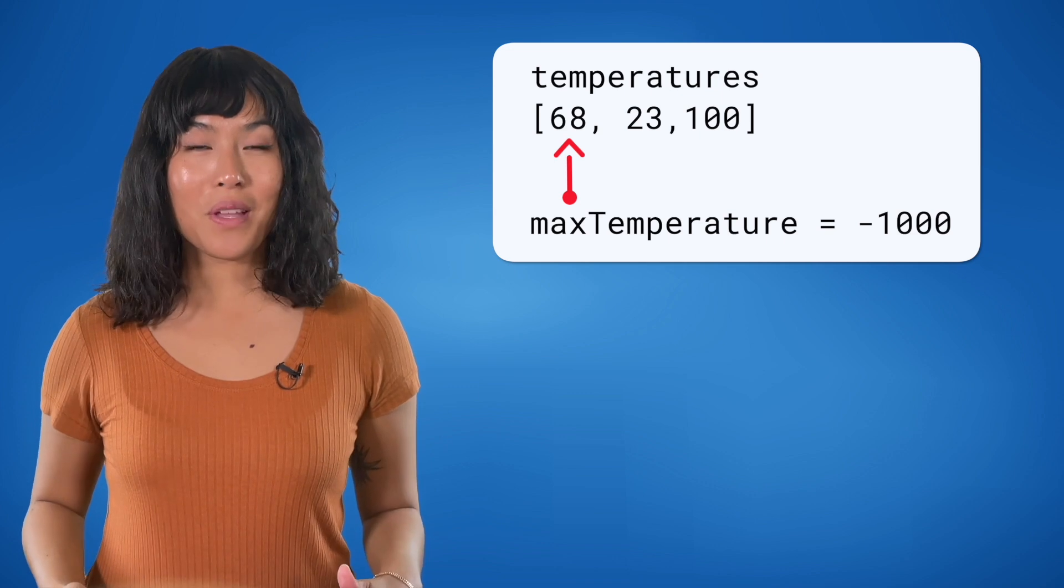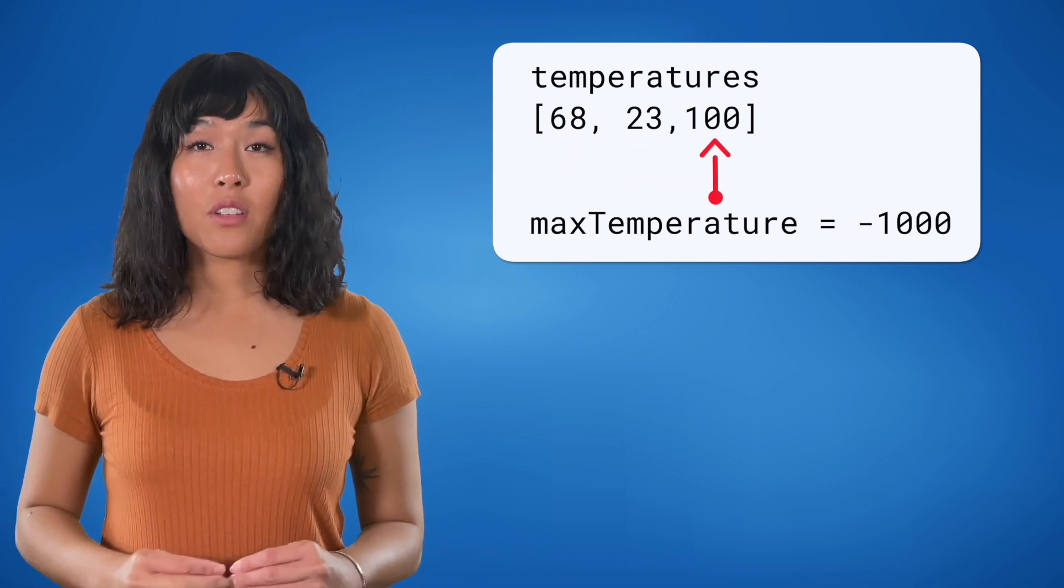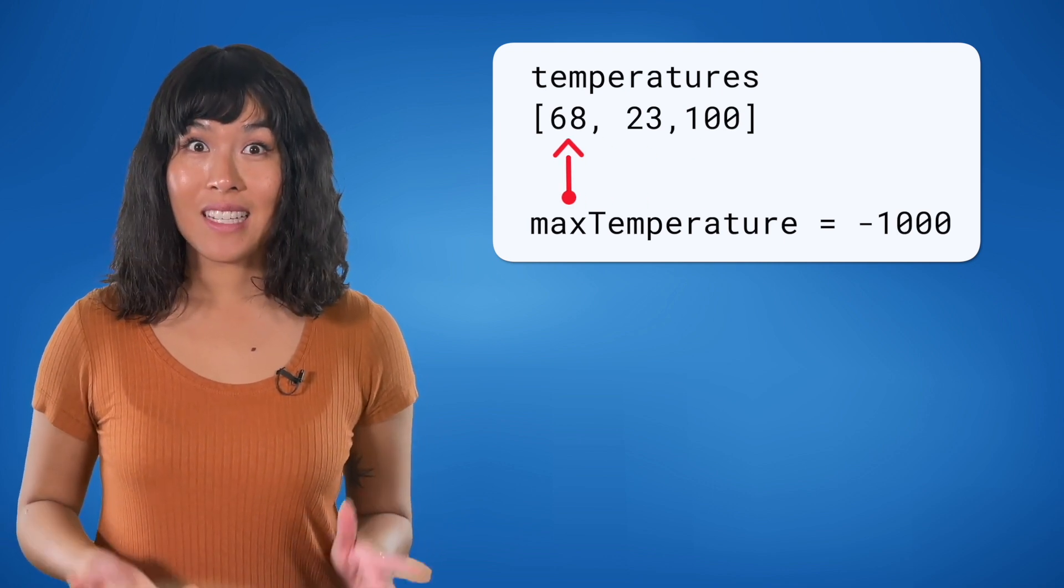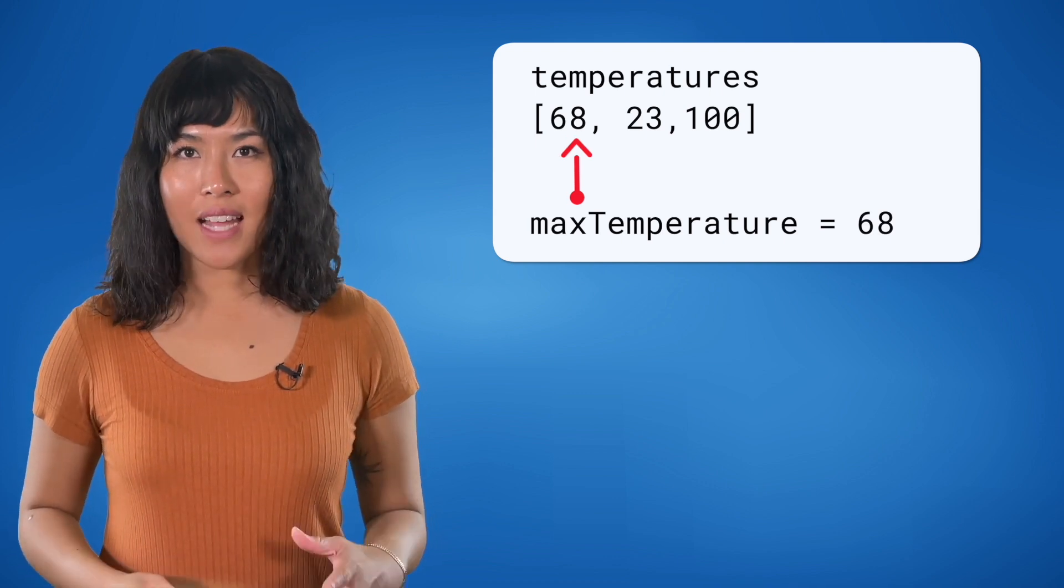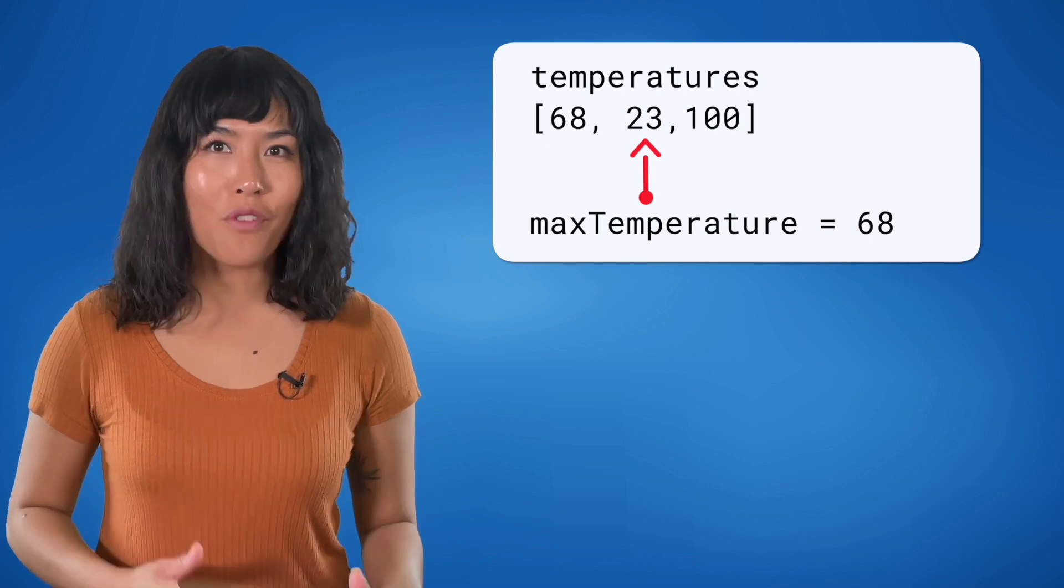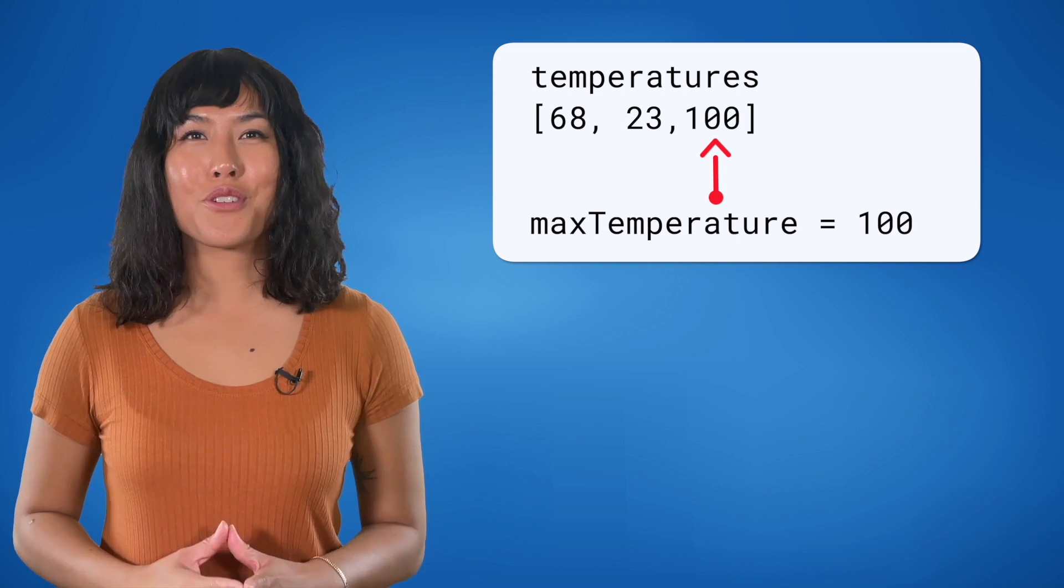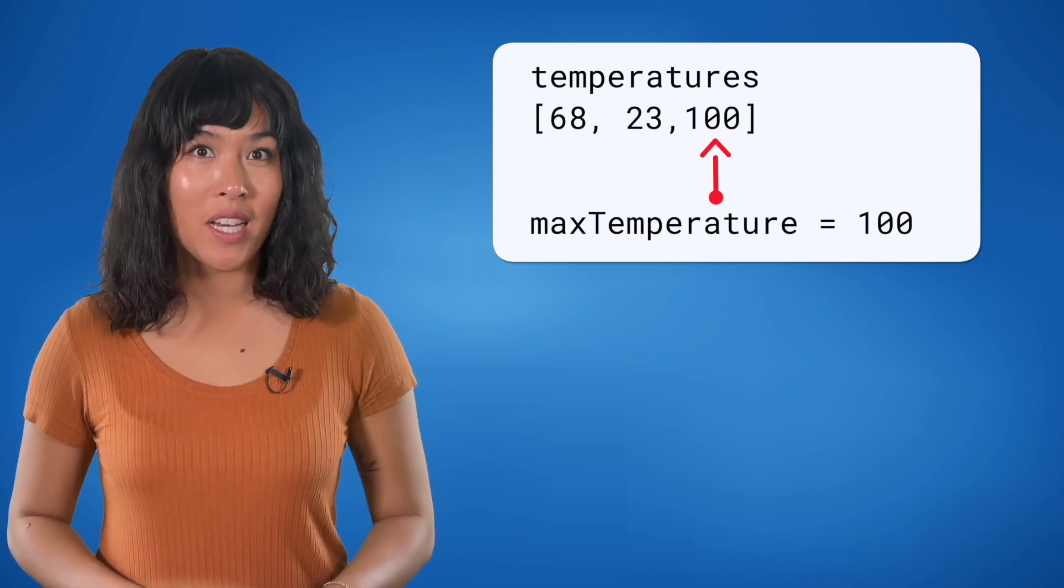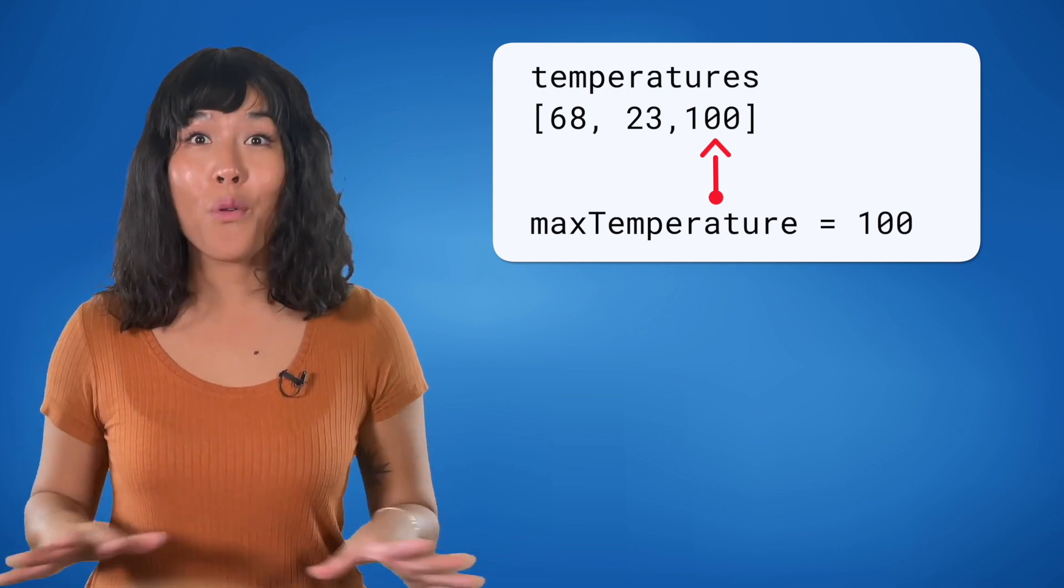For example, if our temperatures are 68, 23, and 100, the computer would start by looking at the first temperature, 68. Is that greater than negative 1000? Yes. So 68 is our max temperature right now. Next, is 23 greater than 68? No. So we move on. Is 100 greater than 68? Yes. So 100 is our max temperature right now. Since we are done with our list, and max temperature is currently 100, we can be sure that max temperature now holds the highest temperature among all the measurements.